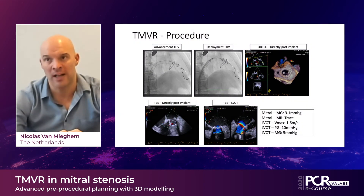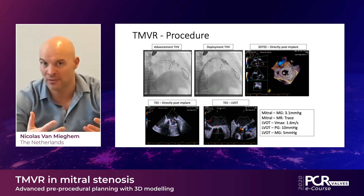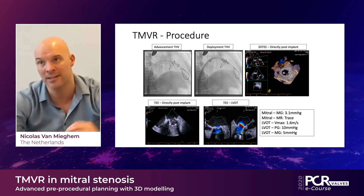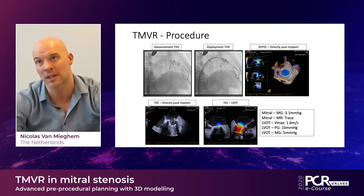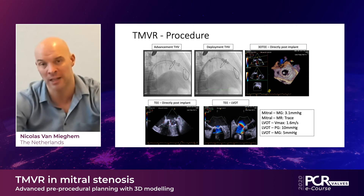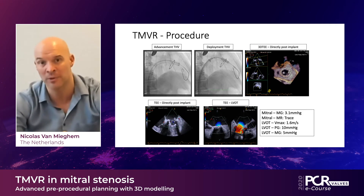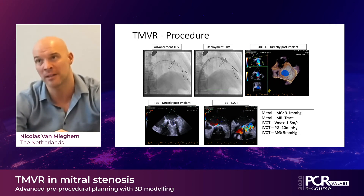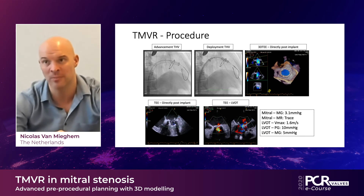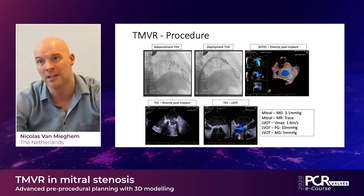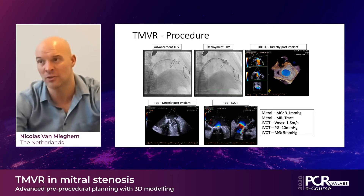The valve was prepared inside the 26 French sheath — the balloon was mounted in the stent frame within the sheath — and the assembly was inserted at the level of the mitral annulus. In this particular case, the surgical ring served as a perfect marker and reference for implantation, and we aimed for a 30/70 percent implantation depth. This all went uneventful, and immediately TEE confirmed no residual mitral regurgitation and no significant gradients over the mitral valve.